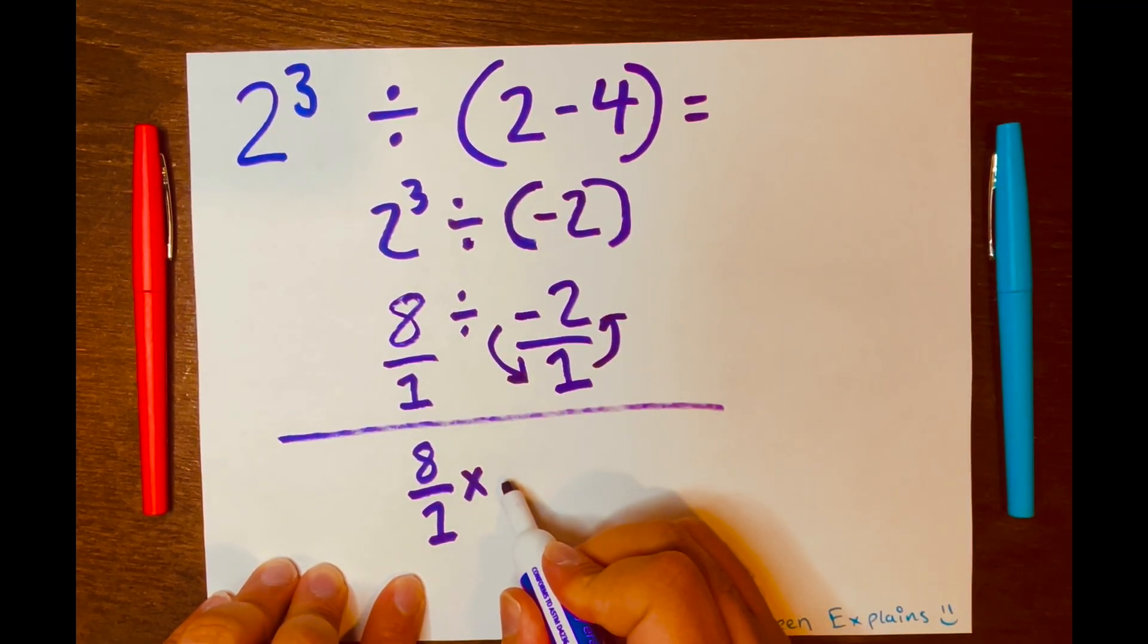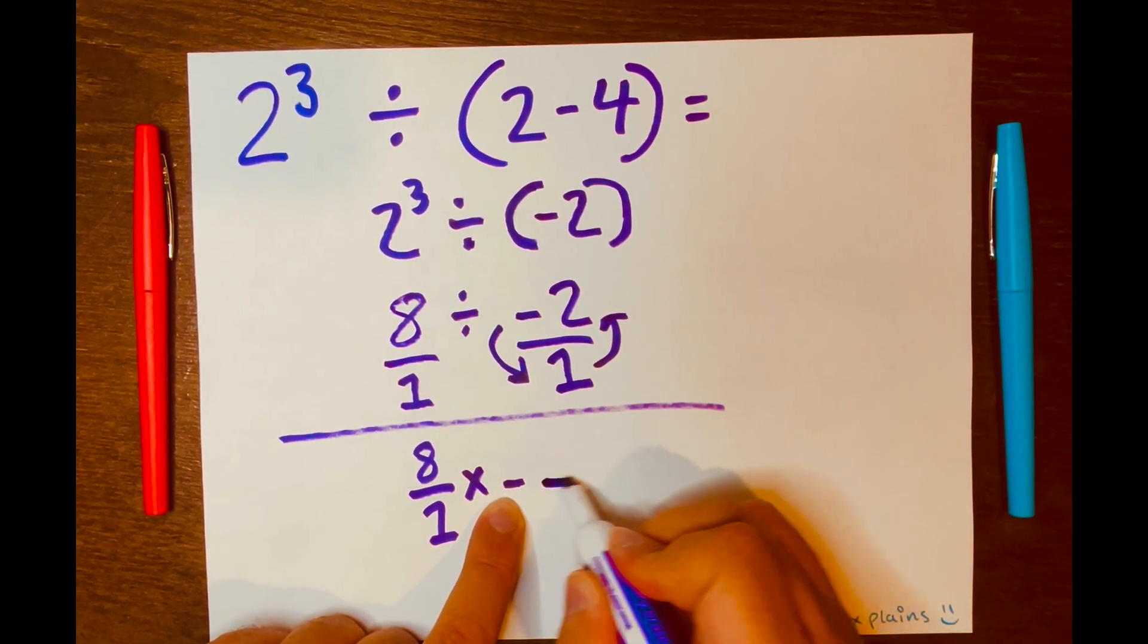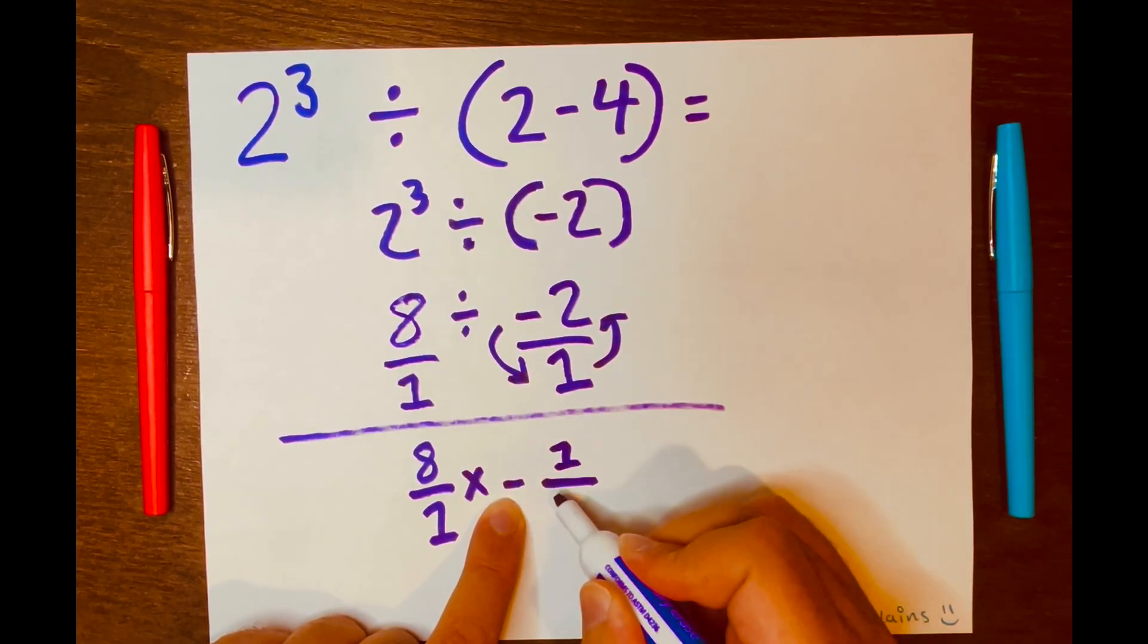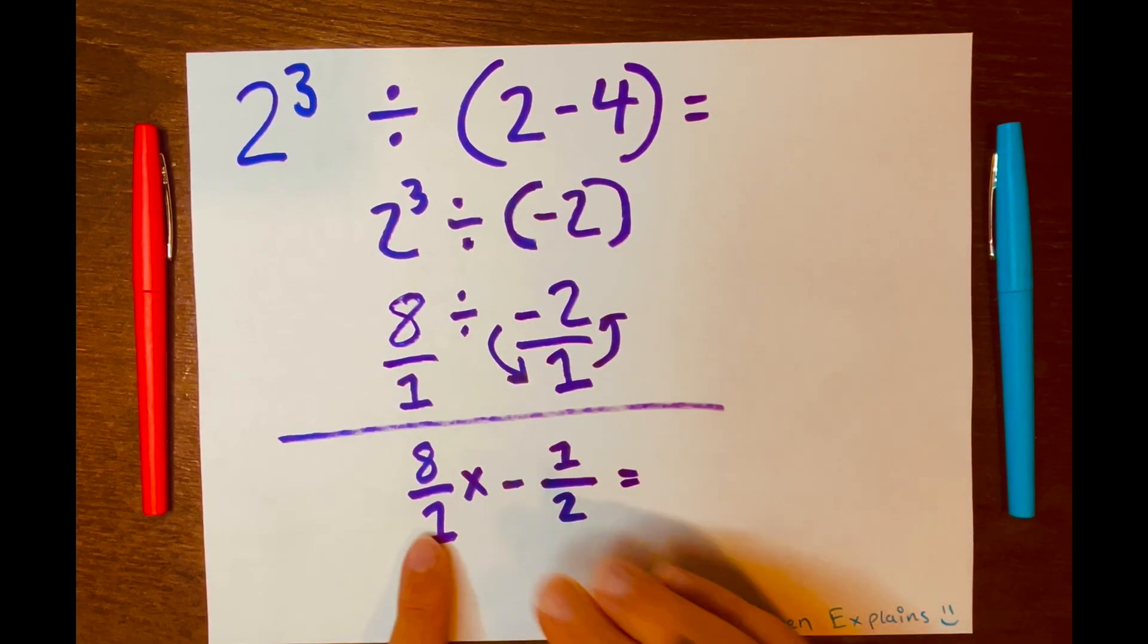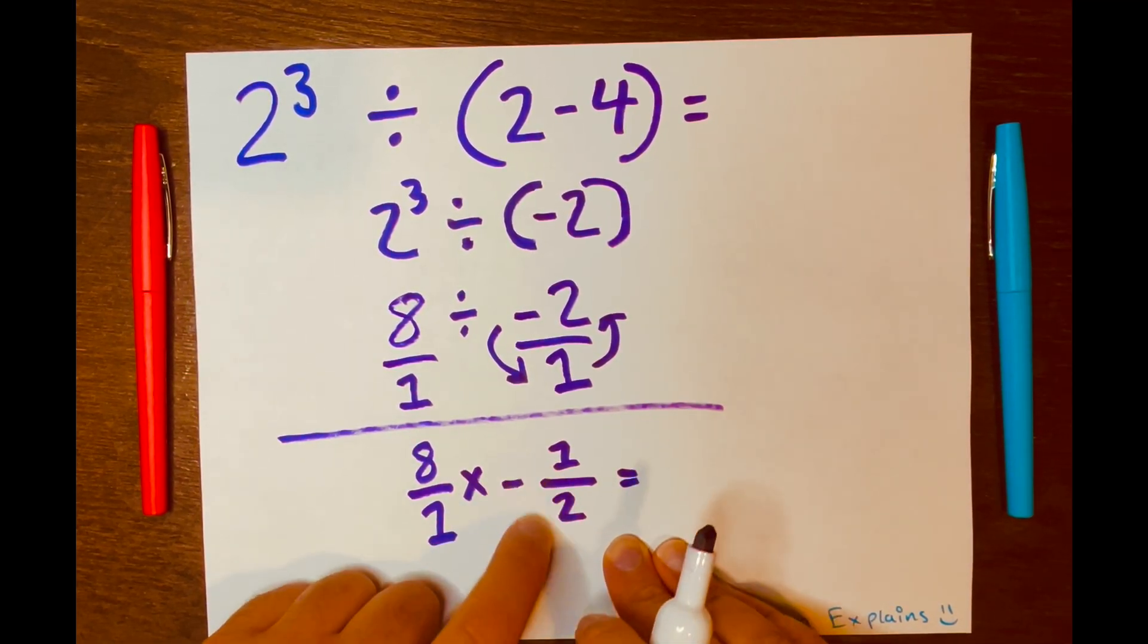So the 1 will go on top of the fraction, and the 2 will go at the bottom of the fraction. And don't forget the negative symbol or sign. So it will be negative 1 over 2. And now we just multiply across.